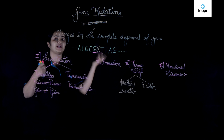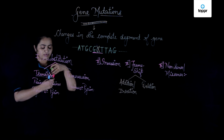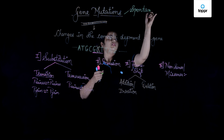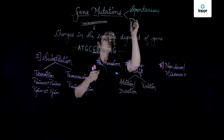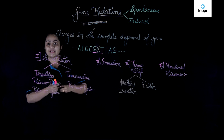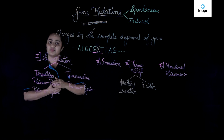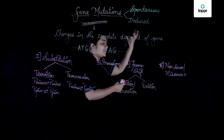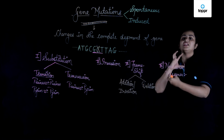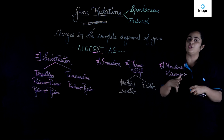Gene mutations can either be spontaneous — happening all of a sudden, when we don't really know why — or they can be induced in a particular organism. When we study genetics and model organisms, we try to induce mutations to study what happens. We give the organism exposure to a mutagen and carry out experiments. Spontaneous and induced are the two types of genetic mutations, and these are the ways in which a gene can change, giving rise to a completely different protein which can be non-functional or defective.